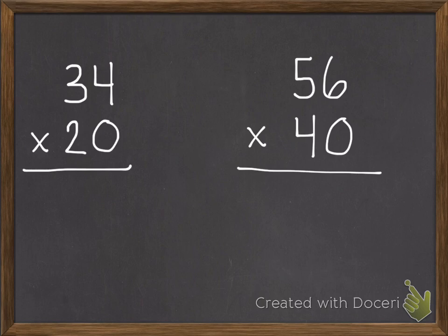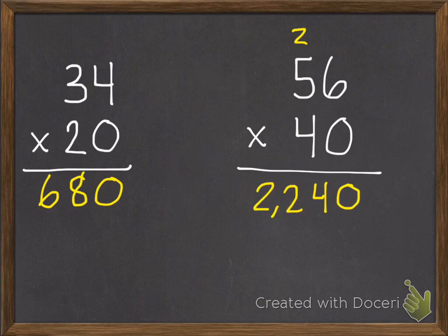First practice problem. Zero times 34 is zero. Two times four is eight. Two times three is six. So you should have gotten 680. Next problem. Zero times 56 is zero. Four times six is 24. Four times five is 20. Plus two is 22. So you get 2,240.